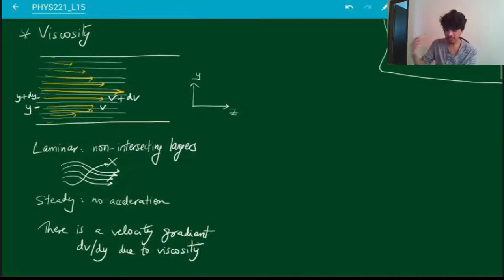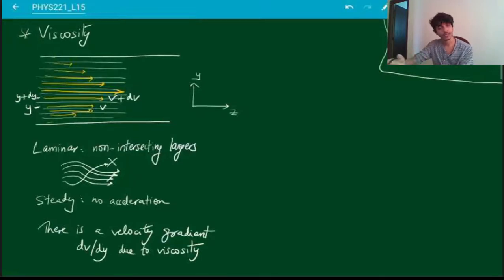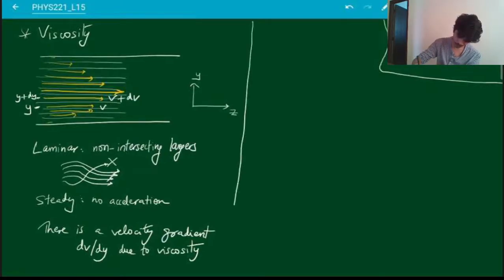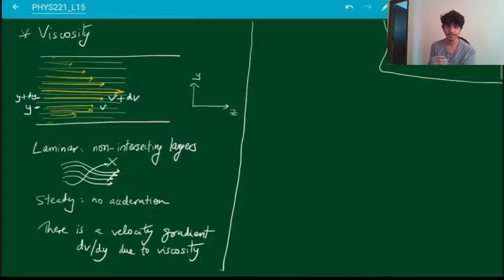If I think of a physical example of what it means to be viscous, think of the flow of a liquid like oil, honey, or lava — these things flow very slowly. That's an example of a highly viscous liquid. Something like water flows very easily, so you can assume that the viscosity for water is less. The question is: how do we quantify this and say that this liquid is less viscous, this liquid is more viscous?